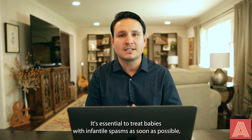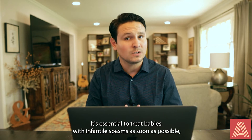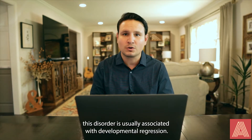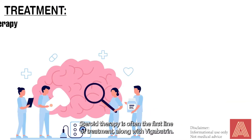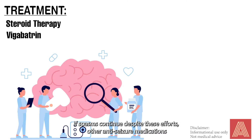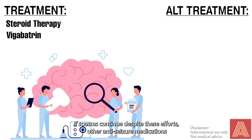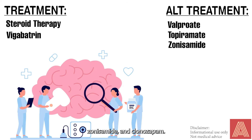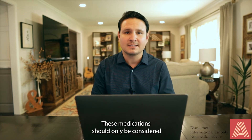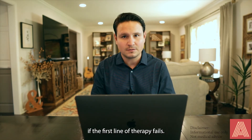It's essential to treat babies with infantile spasms as soon as possible. Unfortunately, this disorder is usually associated with developmental regression. Steroid therapy is often the first line of treatment along with vigabatrin. If spasms continue despite these efforts, other anti-seizure medications that may be helpful include valproate, topiramate, zonisamide, and clonazepam. These medications should only be considered if the first line of therapy fails.